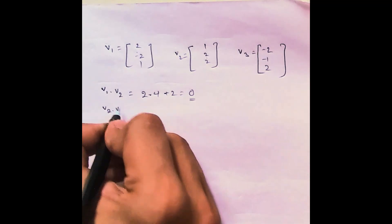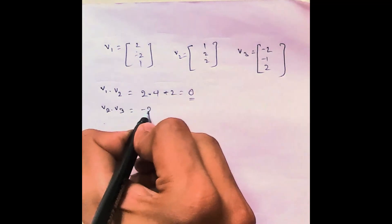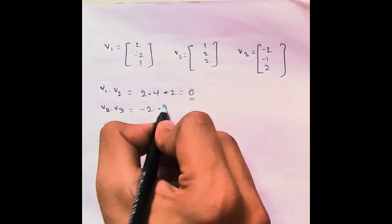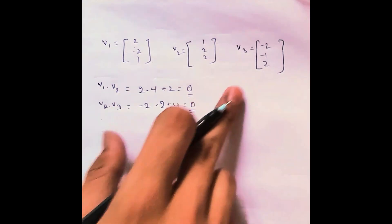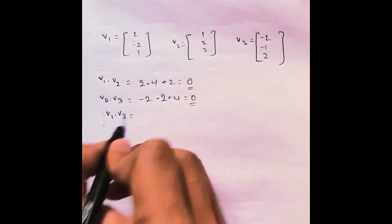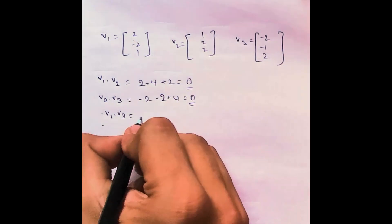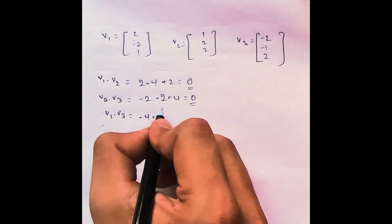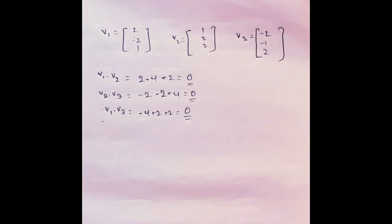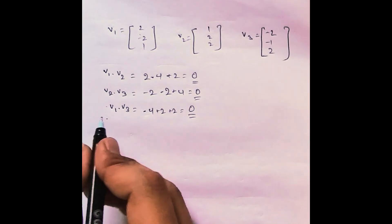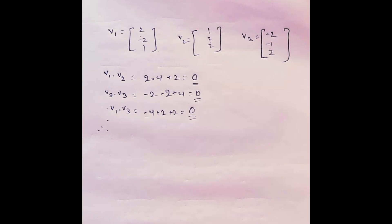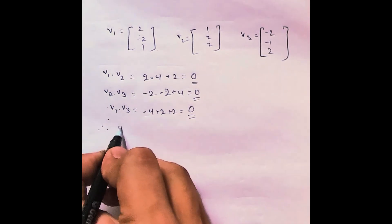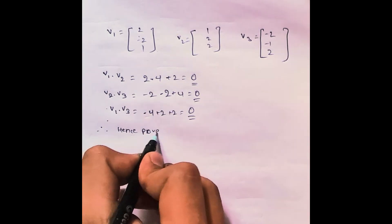Dot product of V2 and V3: 1 into minus 2 is minus 2, 2 into minus 1 is minus 2, 2 into 2 is 4. Total: minus 2 minus 2 plus 4 equals 0. Dot product of V1 and V3: 2 into minus 2 is minus 4, minus 2 into minus 1 is plus 2, 1 into 2 is plus 2. Total equals 0. Since all three dot products are 0, the three eigenvectors are pairwise orthogonal. Hence proved.